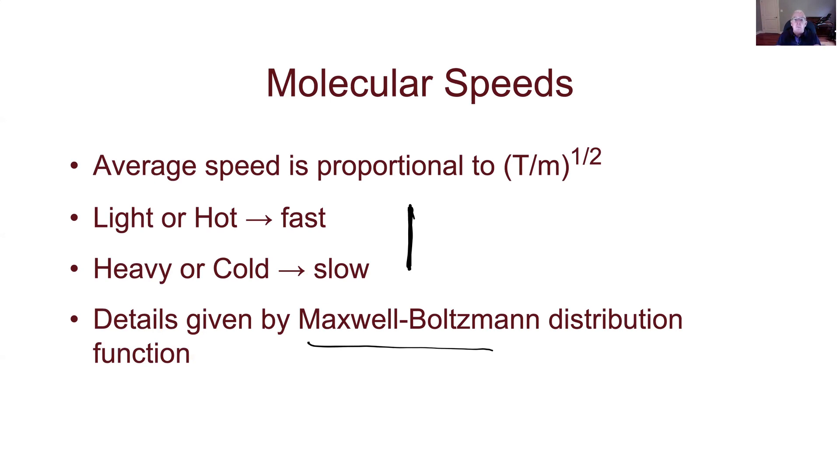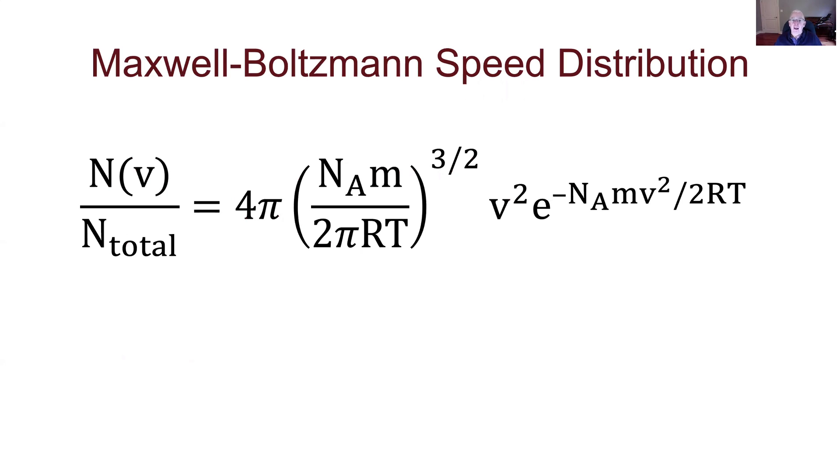I'm going to put an equation up on the slide here in a second. It's going to be one of the more imposing equations that we will look at over the course of the semester, but don't be alarmed by it. I'm going to do my best to convince you that you can just think your way through what it's telling us. And then we'll look at graphs of what it actually shows us to get the main results from it. So this is the expression for this so-called Maxwell-Boltzmann distribution of speeds. And there it is. It's a little bit intimidating.